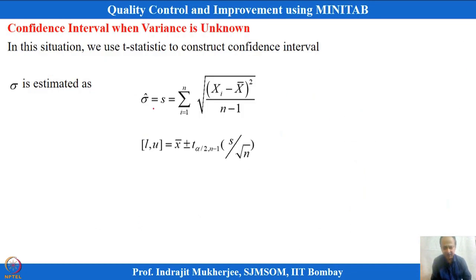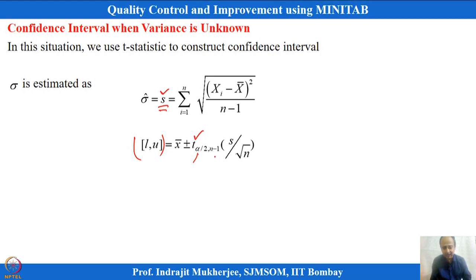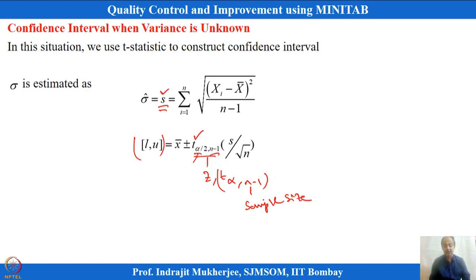Even σ can be estimated with the unbiased estimator S — the sample standard deviation. With S, lower and upper bounds for μ can be given using the T-statistic, where alpha is the level of significance. S is the sample standard deviation calculated from individual observations minus x-bar divided by N−1 degrees of freedom. By defining alpha and N, I can define the confidence interval.